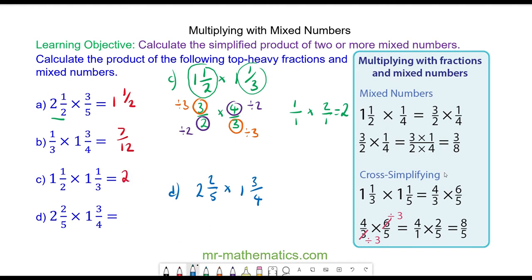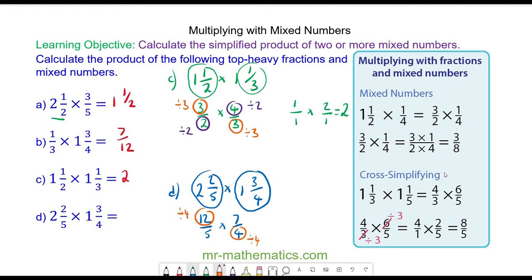For question D, as a top-heavy fraction this is 12 fifths, multiplied by 7 quarters. We can cross-simplify here and here — we divide both by 4. So we have 3 fifths multiplied by 7 over 1, which is 21 over 5. And as a mixed number, this is 4 and 1 fifth.